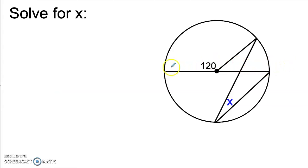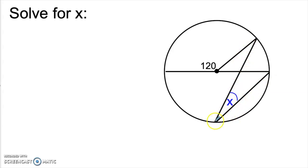So there we have it. We solve for x by using both the properties of a central angle and an inscribed angle in the same circle. Here's another example where we have some central and inscribed angles. We also have a diameter in this circle — this line goes straight across the circle and goes through the center, which means that it cuts the circle exactly in half. We're being asked to find this angle down here, which is an inscribed angle, because it's formed by these two chords and its vertex is on the circle.